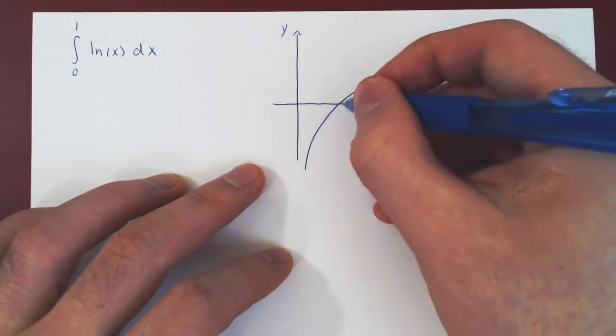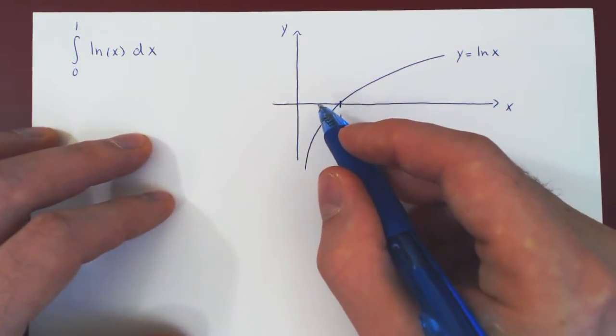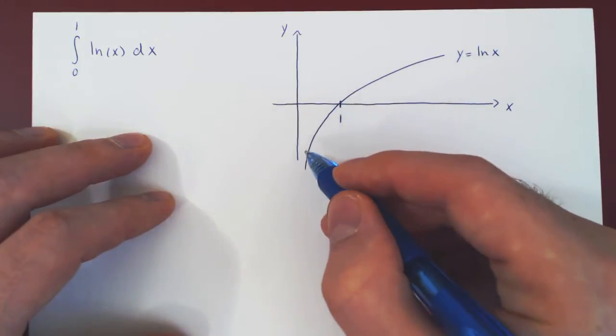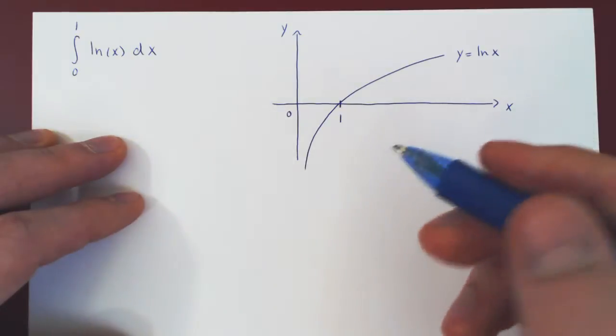We know that ln of 1 is equal to 0 and we know that as x approaches 0 from the left, ln of x approaches negative infinity. And so we can see where our discontinuity lies.